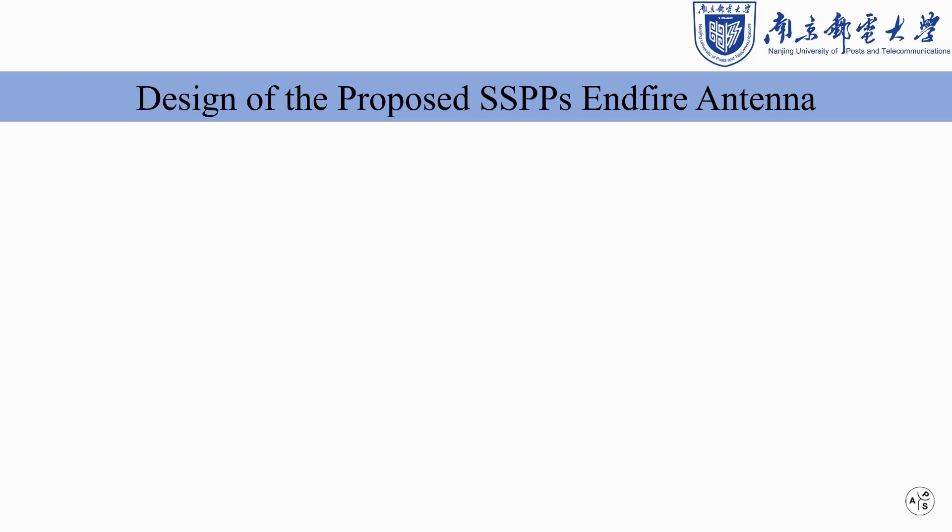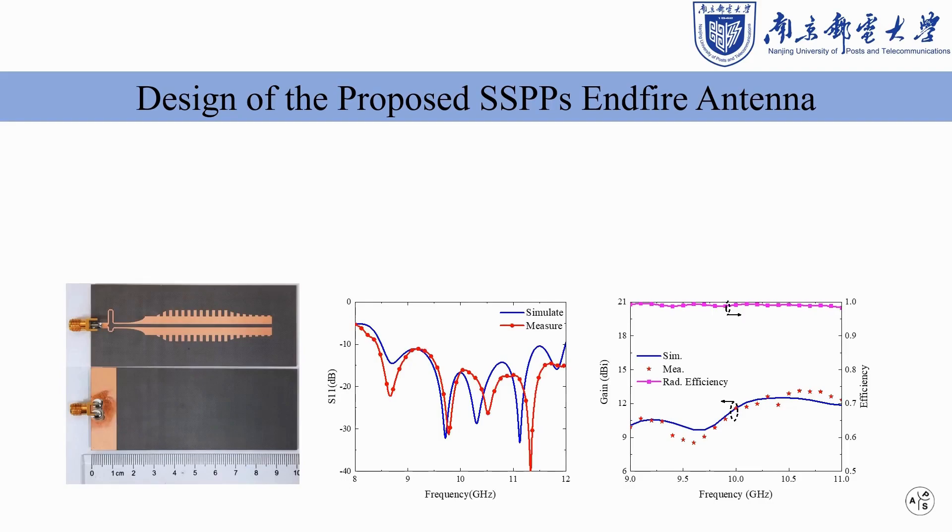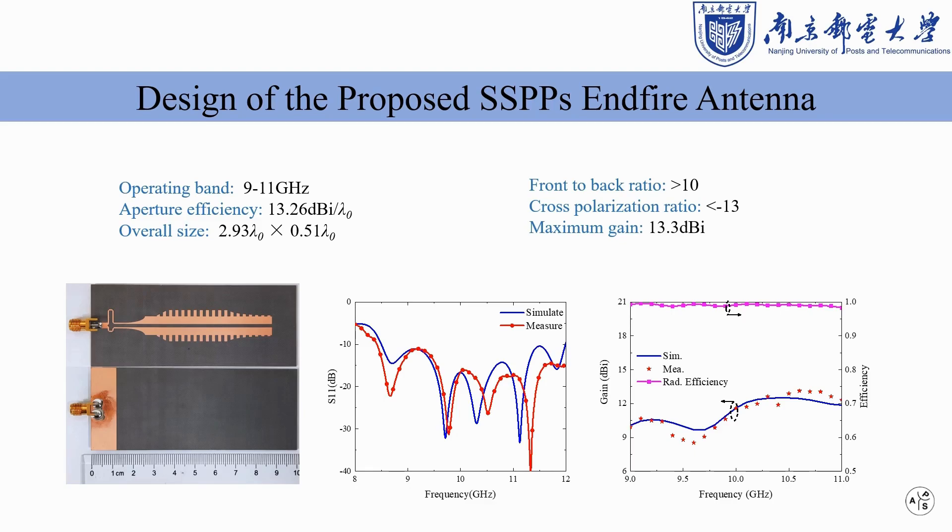Finally, an endfire antenna with zero tilted angle operates in the frequency range of 9 GHz to 11 GHz and achieves an average gain of 11.51 dBi.